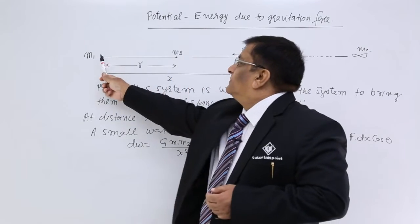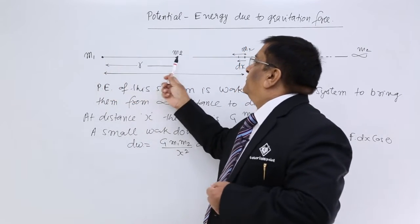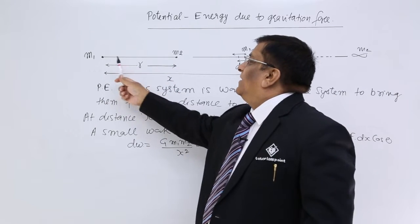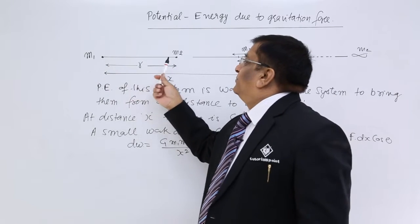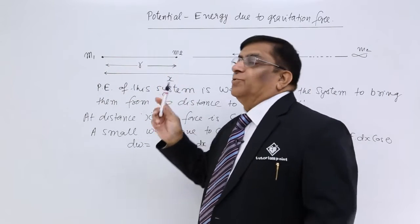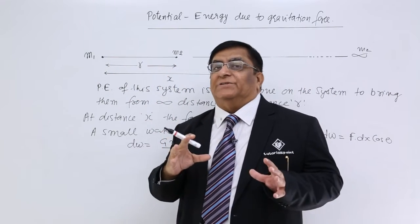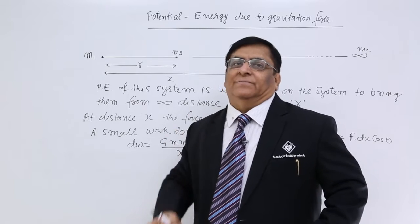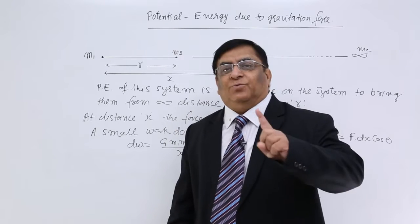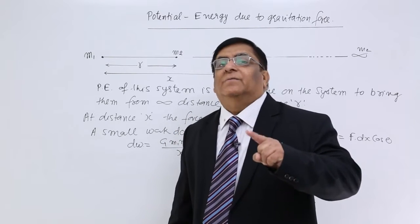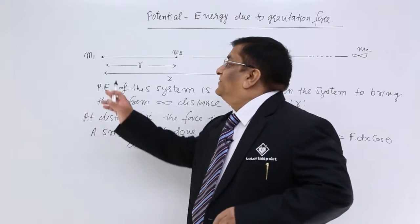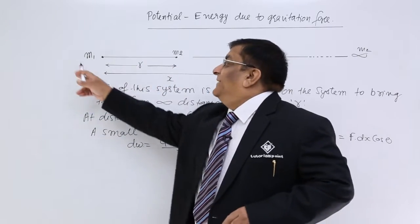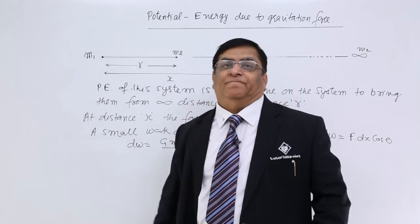Here, M1 and M2 are at a distance r. This is their position. To bring them to this position, some work might have been done, and that work has become the potential energy of this combined system.